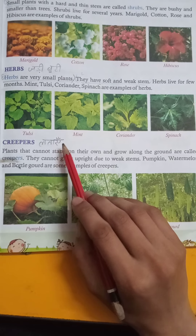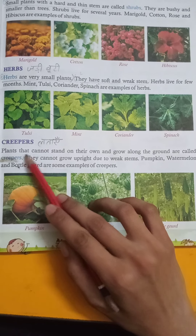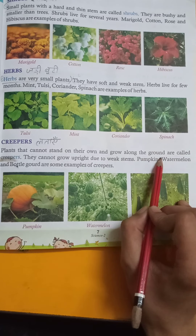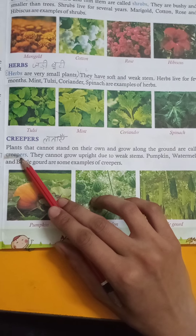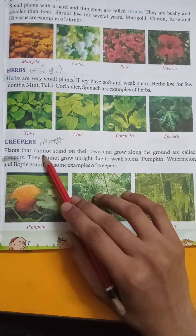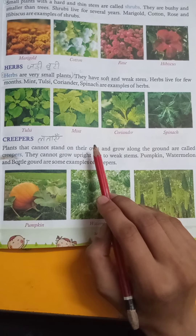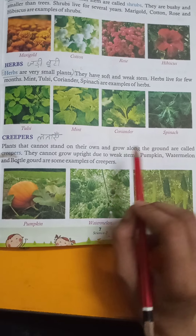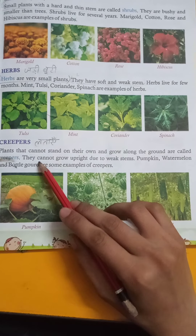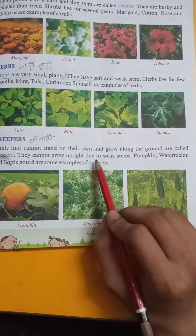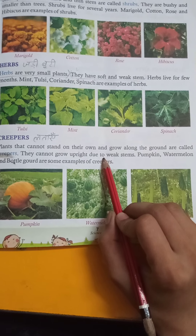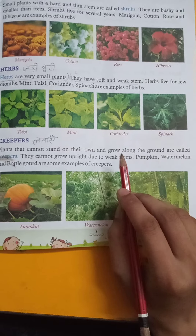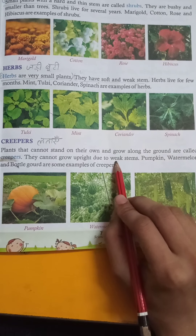Creepers — creepers means latayin. Plants that cannot stand on their own and grow along the ground are called creepers. They cannot grow upright due to weak stems.